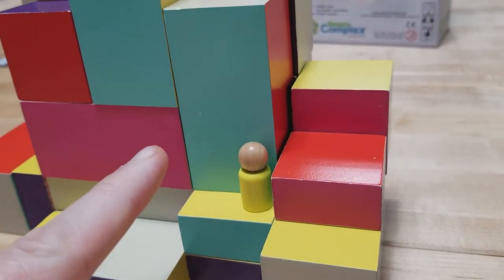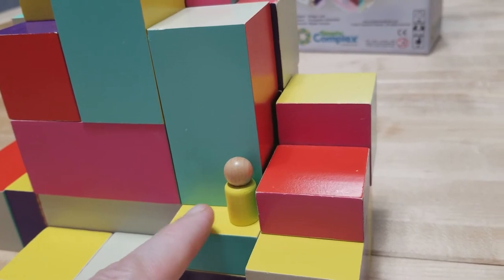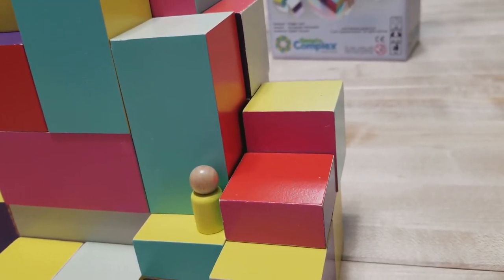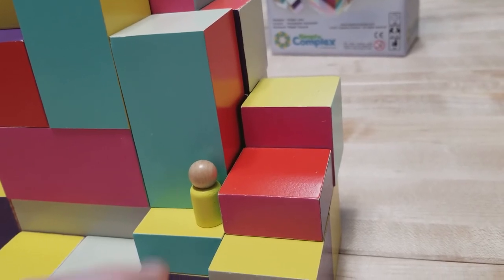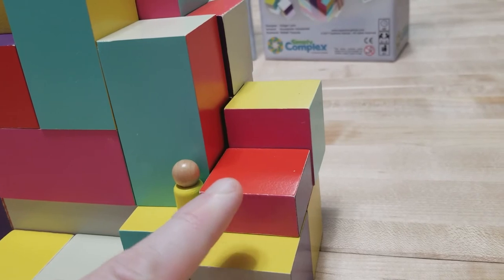On a player's turn, either before, during, or after moving a pawn, they may pick up and move one block in the structure. They also have the option to rotate the block to any side that they would like.